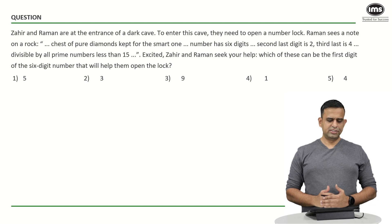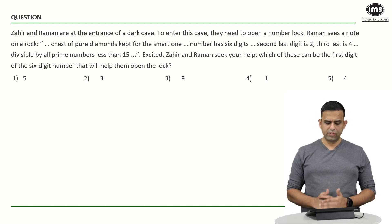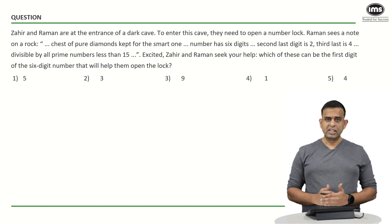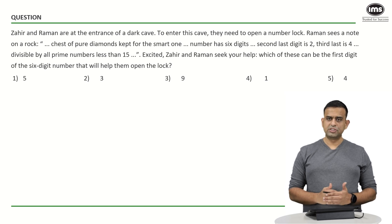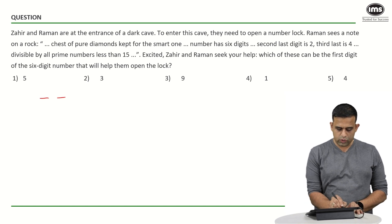So in this particular sum, it says that Zaheer and Raman are at the entrance of a dark cave. To enter this cave, they need to open a number lock. Raman sees a note on a rock: chest of pure diamond kept for the smart one. Number has six digits. So we have let's say 1, 2, 3, 4, 5, 6.